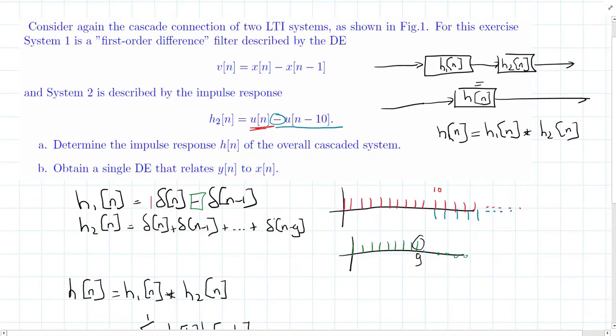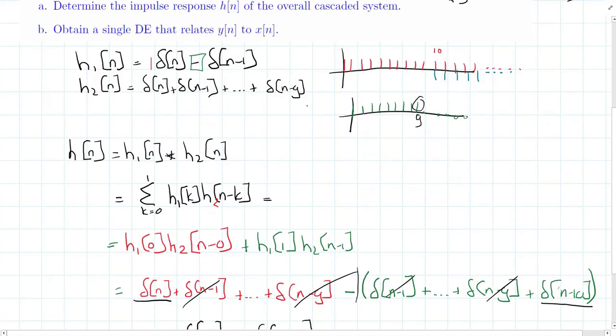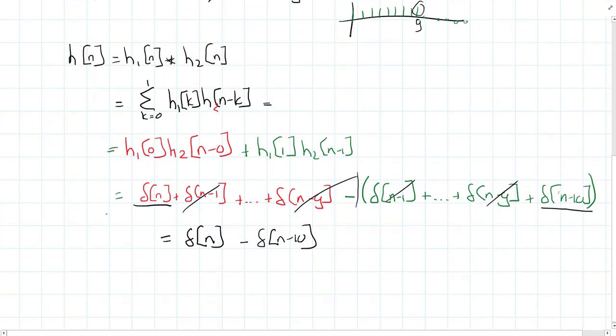For exercise b we have to obtain a difference equation which relates y of n to x of n. If we already have the impulse response, it's quite easy. Because y of n is then simply equal to x of n minus x n minus ten.